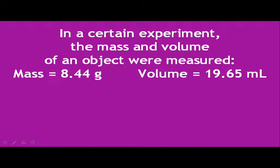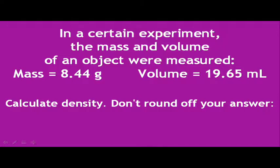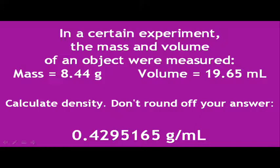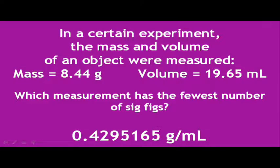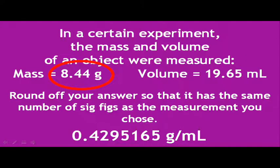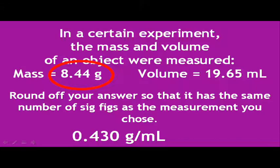In our next example, we are going to calculate the density of an object. The mass is 8.44 grams, and the volume is 19.65 milliliters. To calculate density, we divide mass divided by volume, and we get 0.4295165 grams per milliliter. Considering that the 8.44 grams has the fewest number of sig figs, then we must round off our answer to have exactly 3 sig figs. Since the leading 0 is not significant, we start with the 4, and then the 2, and then finally the 9, it must be rounded up. Because the next digit after the 9 is a 5, we round up that position. So our final answer, when rounded, is not going to be 0.429, but rather 0.430 grams per milliliter.